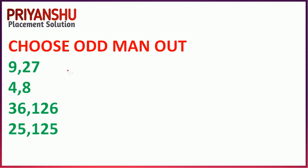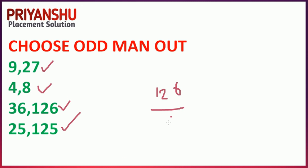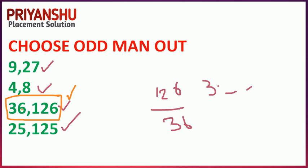Next question: choose the odd one out. Every three options follow the same concept — one does not. For example: 27 is fully divisible by 9, 8 is fully divisible by 4, 125 is fully divisible by 25. But 126 is not fully divisible by 36 — it gives approximately 3-point-something. So the correct answer is 126, because it does not follow the rule.